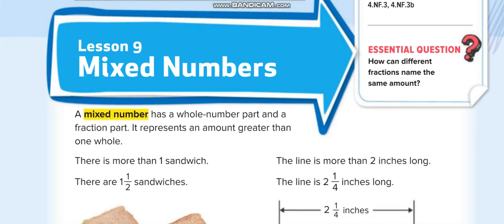First, understand what mixed numbers are. You know there are whole numbers like 1, 2, 3, 4, 5, 6 — these are whole numbers. And there are fractions like 1 over 2, 3 over 4. Alone, that's a fraction.